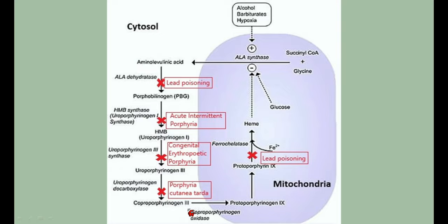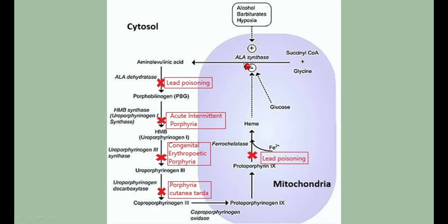Protoporphyrin 9 is the final protoporphyrin form. The enzyme ferrochelatase combines a ferrous (Fe2+) molecule with protoporphyrin 9 to form heme. Ferrochelatase is also sensitive to lead poisoning, similar to ALA dehydratase. Heme formed exerts negative feedback inhibiting ALA synthase. Glucose also inhibits ALA synthase, while alcohol, barbiturates, and hypoxia have stimulatory effects increasing heme synthesis.